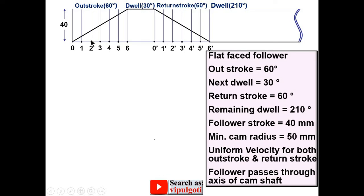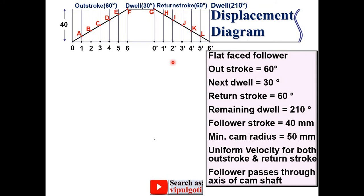Mark the intersection points on the outstroke inclined line and label them A, B, C, D, E, F. Similarly mark the intersection points on the return stroke and label them G, H, I, J, K, L. This completes your displacement diagram.